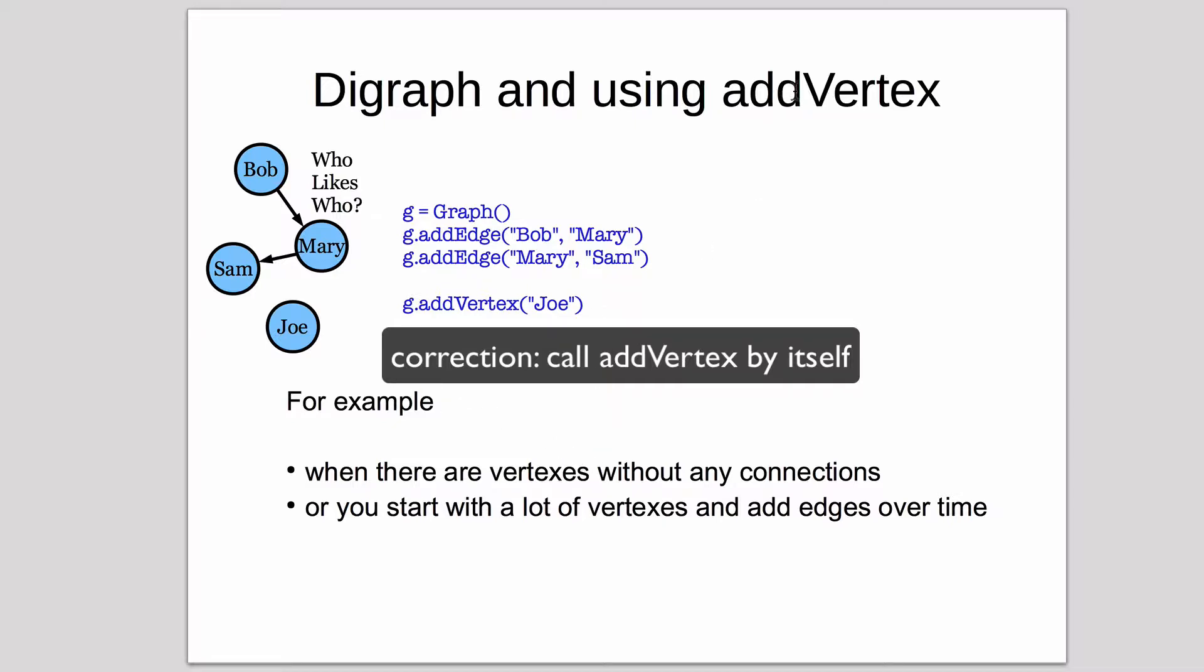And the reason you might use add vertex is in this case where you have a vertex that has no connections, or you have a dynamic graph and you want to add vertexes later over time.